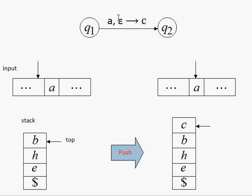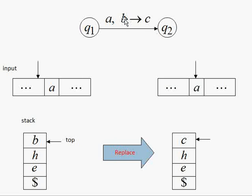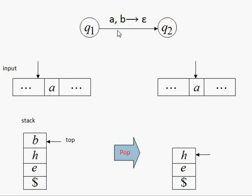The second operation is the push operation. If we are in state q1, get a as input, and epsilon is over the stack, then we will put c there. Anytime we write a comma epsilon arrow c, that means we are just pushing that element. There will be no replacement; in case of replacement we had something other than epsilon on the stack.